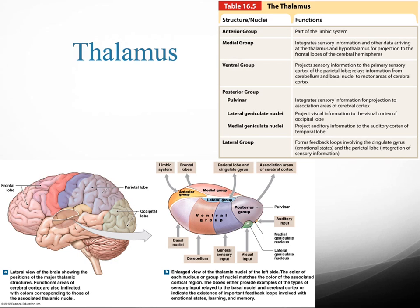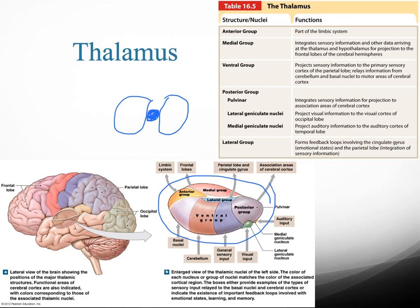Now let's talk about the thalamus, which is a little bit more complex because it has several different structures. It's going to be formed by the walls of the third ventricle, and there is going to be a right and left thalamus. They're going to be divided by the interthalamic adhesion — a little connection point — so on each side of the hemisphere you have a right and left thalamus. It has sort of an egg-shaped structure with several different compartments.